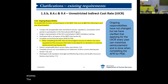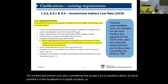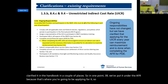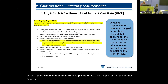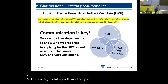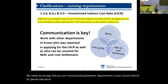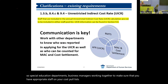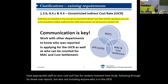The unrestricted indirect cost rate is something we get a lot of questions about, so we've clarified it in the handbook in a couple of places. In section 1.3b, we've put it under the AFR because that's where you're going to be applying for it. You apply for it in the annual financial report, and it helps boost your reimbursement. It's not a requirement, but it helps you and cannot hurt you. We really encourage communication between departments in your school district — special education departments and business managers — working together to make sure you have appropriate staff on your cost pool lists for the random moment time study.